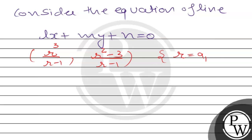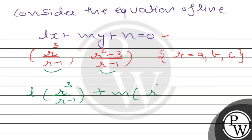Since r can be a, b, or c, and these points are collinear, they lie on the line LX+MY+N=0. Substituting the x and y coordinates — r³/(r-1) and (r²-3)/(r-1) — into the line equation gives us L·(r³/(r-1)) + M·((r²-3)/(r-1)) + N = 0.